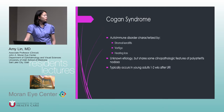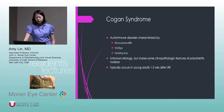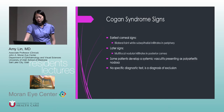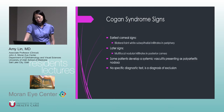Cogan syndrome is a rare autoimmune disorder characterized by stromal keratitis, vertigo, and hearing loss. It's of unknown etiology but shares some features of polyarteritis nodosa. It typically occurs in young adults one to two weeks after an upper respiratory infection. Early signs include bilateral faint white sub-epithelial infiltrates in the periphery; later there are multifocal nodular infiltrates in the posterior cornea. Some patients develop a systemic vasculitis presenting as polyarteritis nodosa.